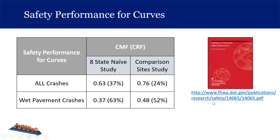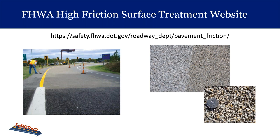When referencing studies, the documents are right there on the slide so you can download or view them on your own time. That's the FHWA Evaluation of Pavement Safety Performance document with the research study referenced. For even more information, you can go to the FHWA Office of Safety webpage under roadway departure, where they have a pavement friction website. The photos shown are from the FHWA website.